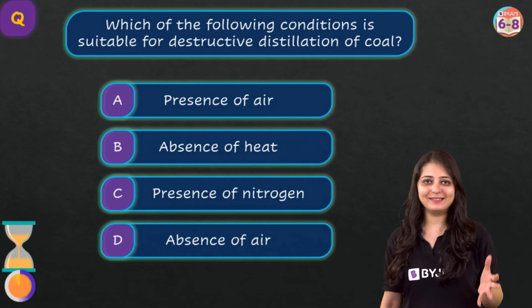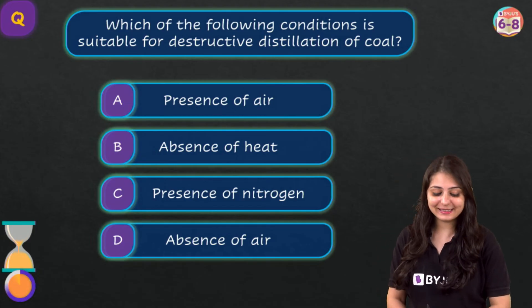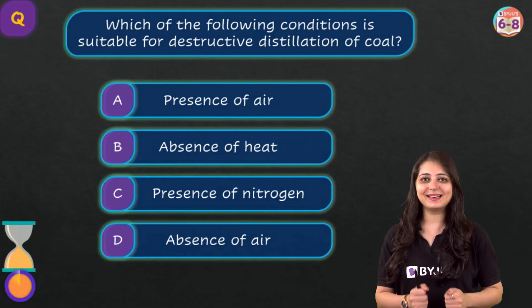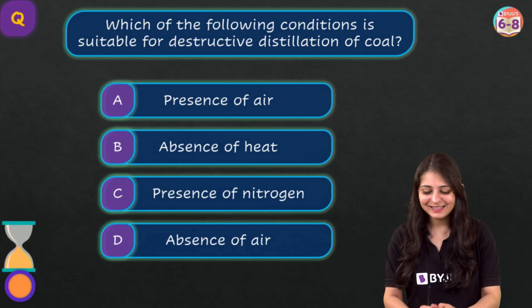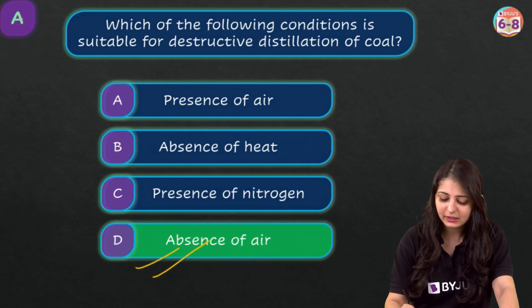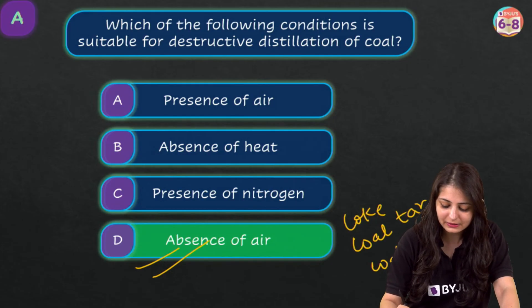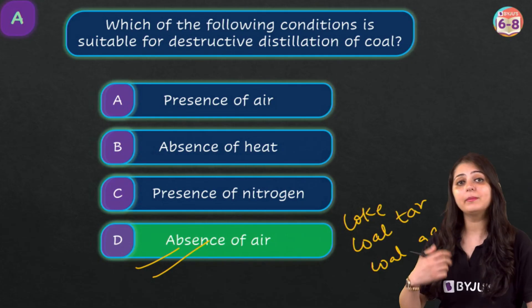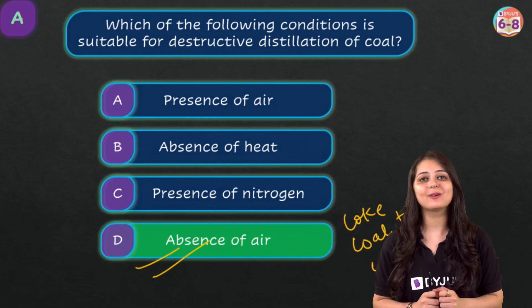This point has been emphasized multiple times. The correct answer is option D — absence of air. When we heat coal in the absence of air, we get coke, coal tar and coal gas. If we heat it in the presence of air, we only get carbon dioxide, which is not of much use. The catch is absence of air.